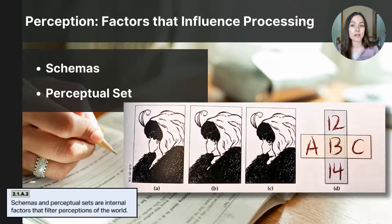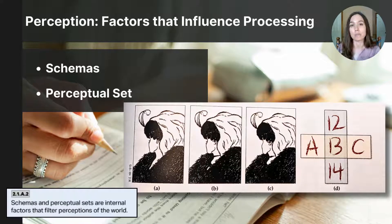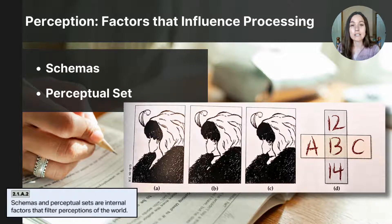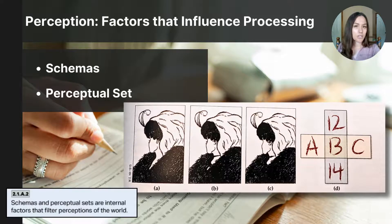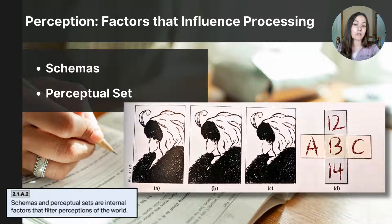Let's focus on two concepts that shape our top-down processing: schemas and perceptual set. Schemas are mental structures or categories that help us organize and interpret information based on past experiences and knowledge. They allow us to quickly make sense of new information by fitting it into existing categories. Schemas can be useful for understanding and predicting events, but they can also lead to biases or errors in perception. For example, if someone has a schema that dogs are friendly, they might approach an unfamiliar dog without caution — but this could lead to a misjudgment if the dog is aggressive.